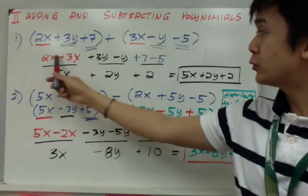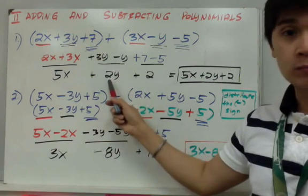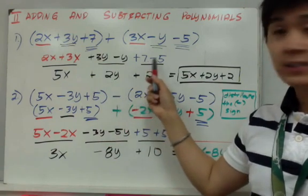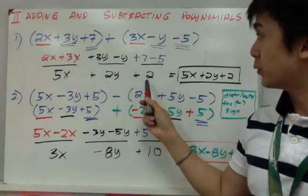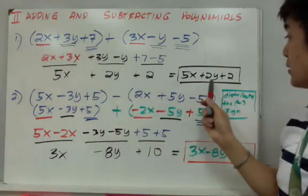And 7 minus 5 will give me positive 2. So when I combine number one by addition, it's simply 5x + 2y + 2.